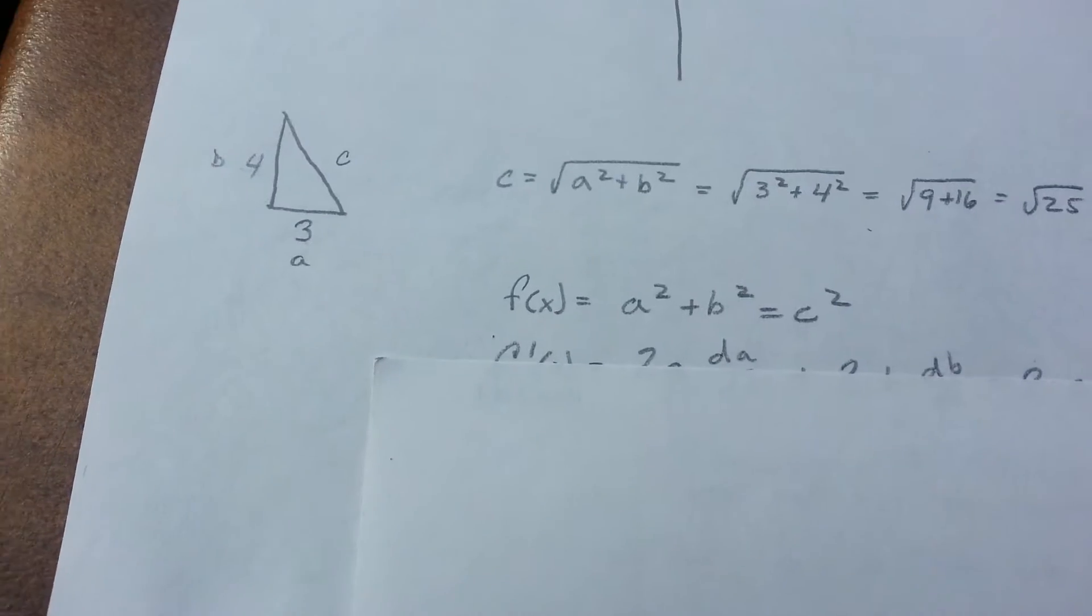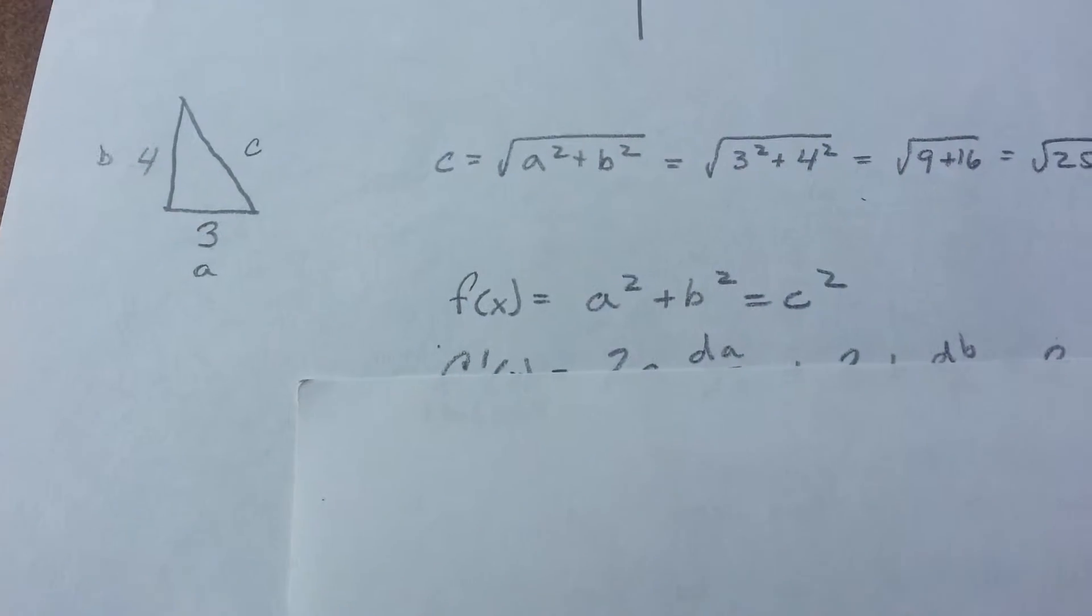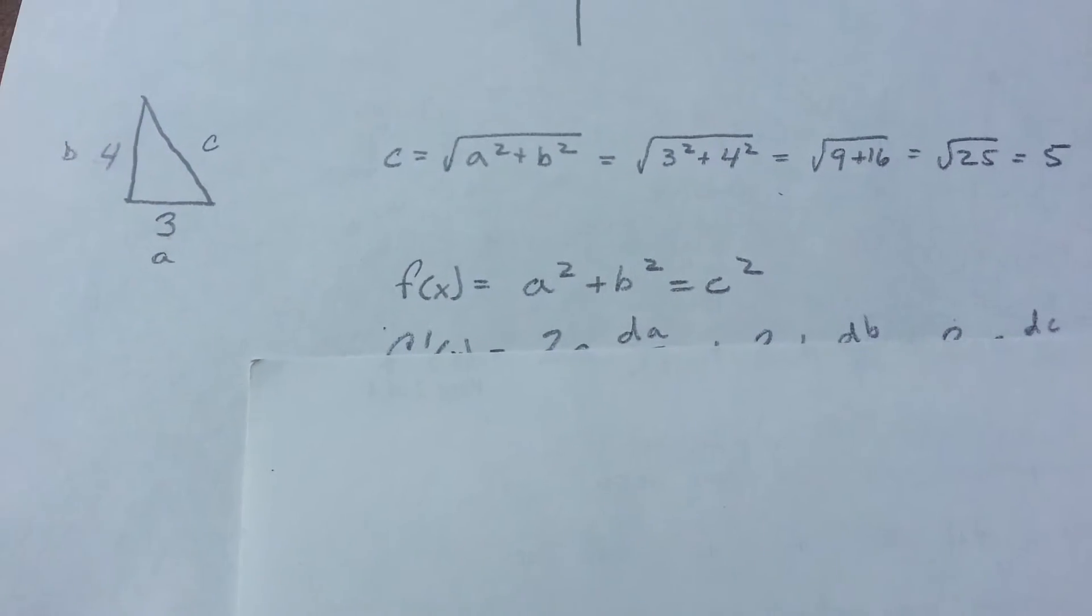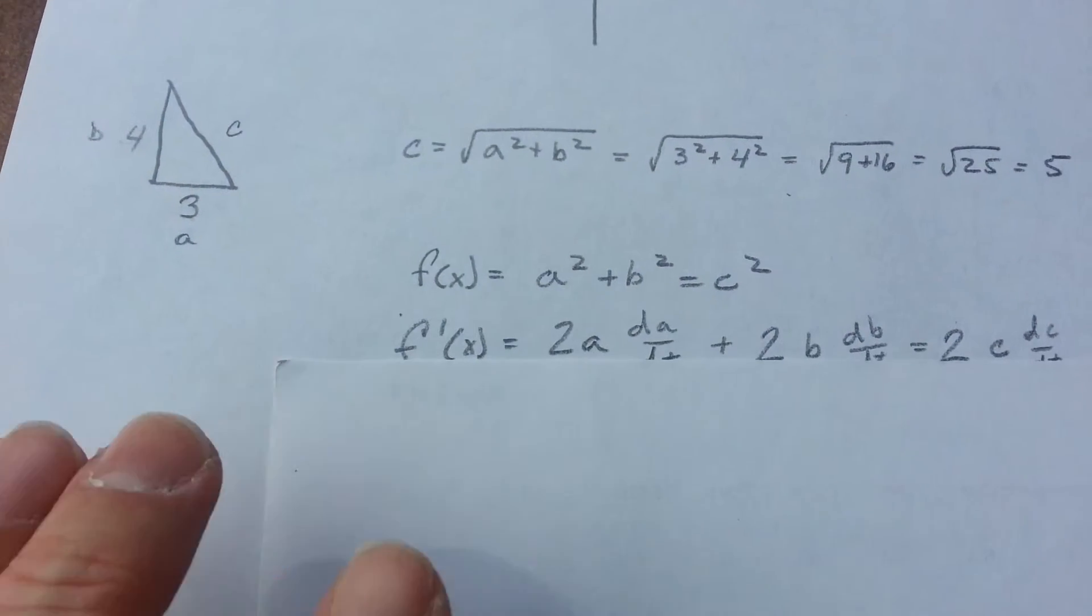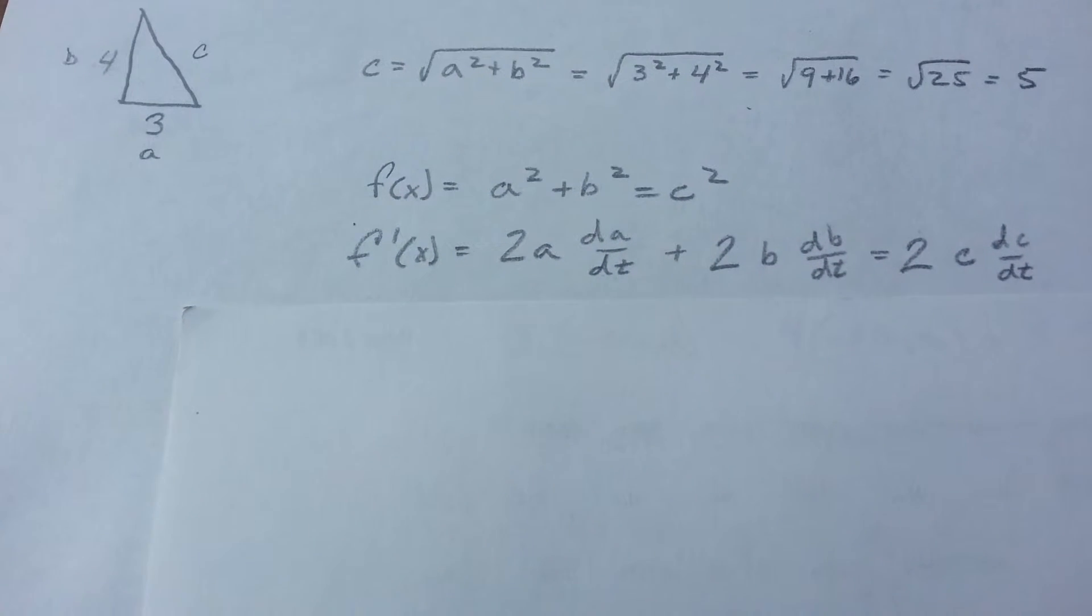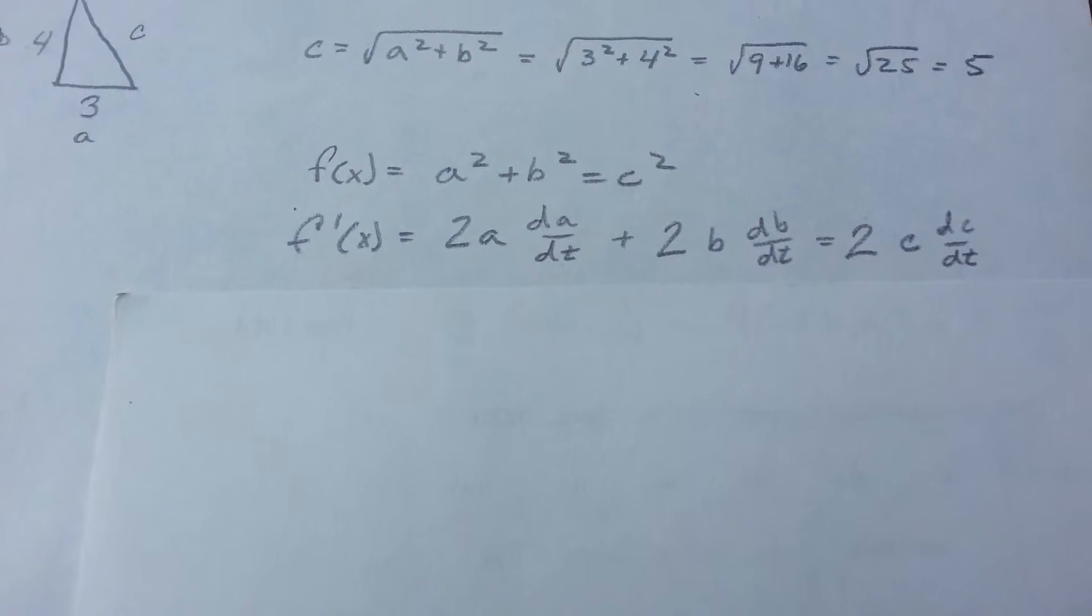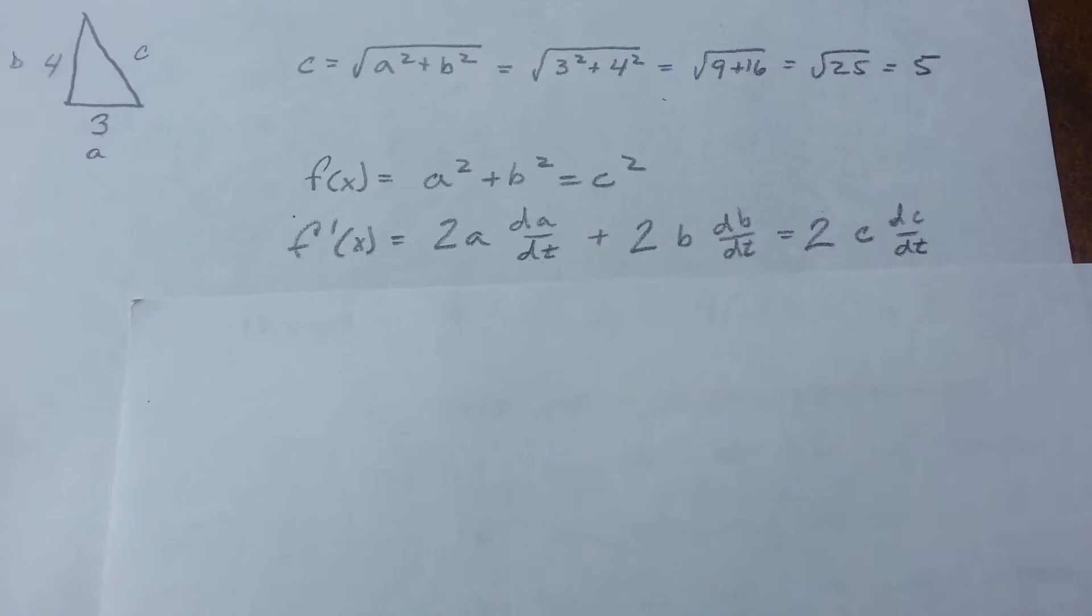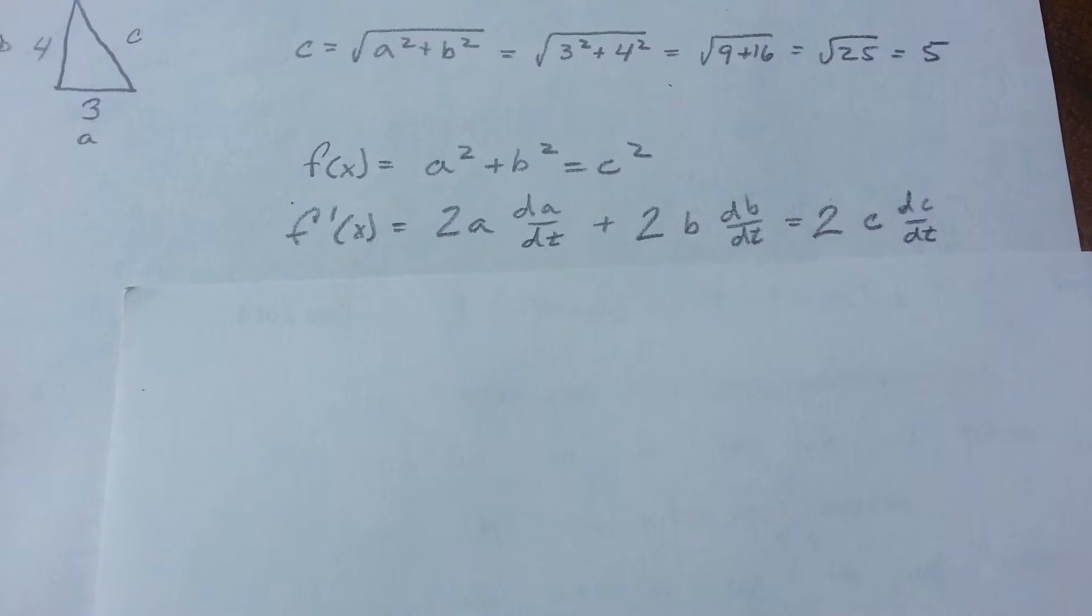The next thing we want to do is find the derivative. So the derivative of A square plus B square equals C square is 2A dA over dt plus 2B dB over dt equals 2C dC over dt.